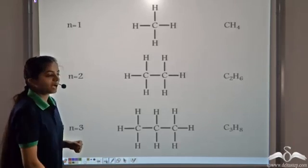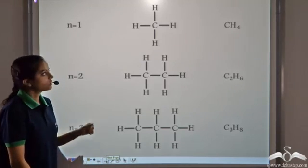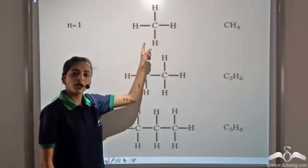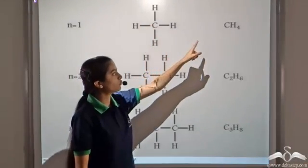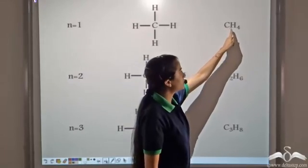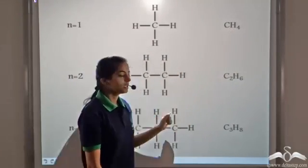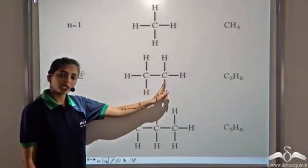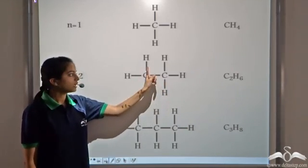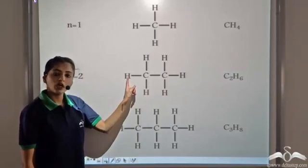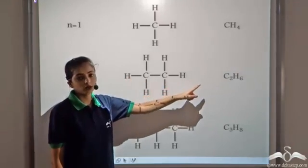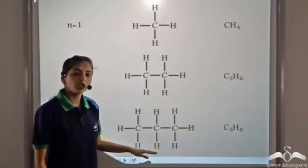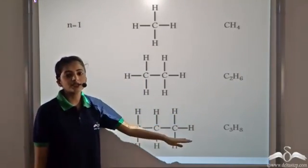So these are the three alkanes we get. When n equals one, one carbon atom is linked to four hydrogen atoms, giving the formula CH4. When n equals two, the formula is C2H6. Similarly, for n equals three, we get C3H8.